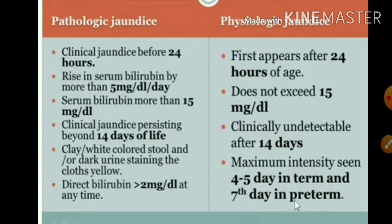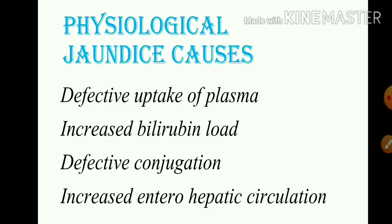Pathological jaundice features include clay or white-colored stool and dark urine staining. The maximum intensity of physiological jaundice is seen on the 4th to 5th day in term babies, and on the 7th day in preterm babies, after which the discoloration clears.